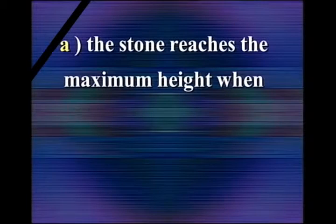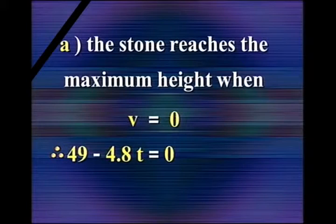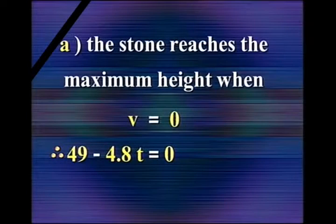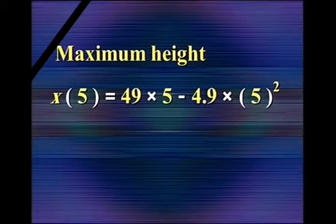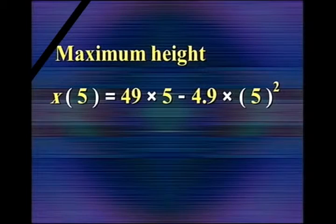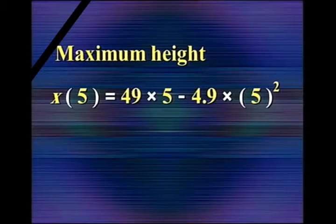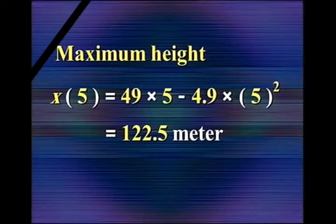The stone reaches maximum height when V equals zero. Therefore, setting 49 minus 9.8T equals zero, we find T equals 5 seconds. The maximum height is found by substituting T equals 5: X(5) equals 49 times 5 minus 4.9 times 5 squared, giving the answer 122.5 meters. This is the maximum height the body reaches.